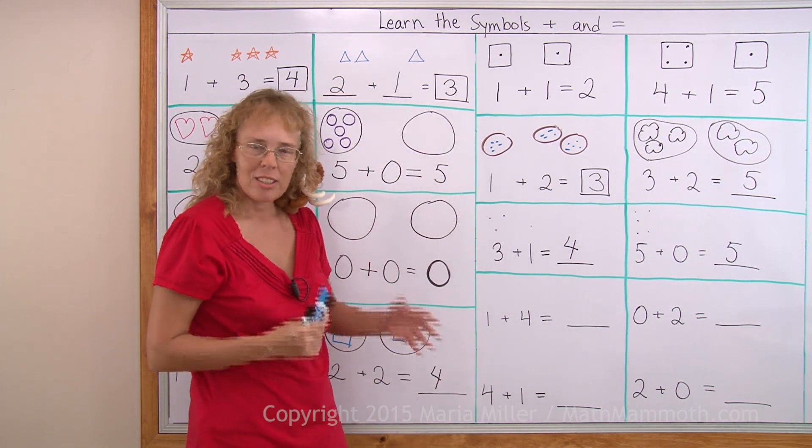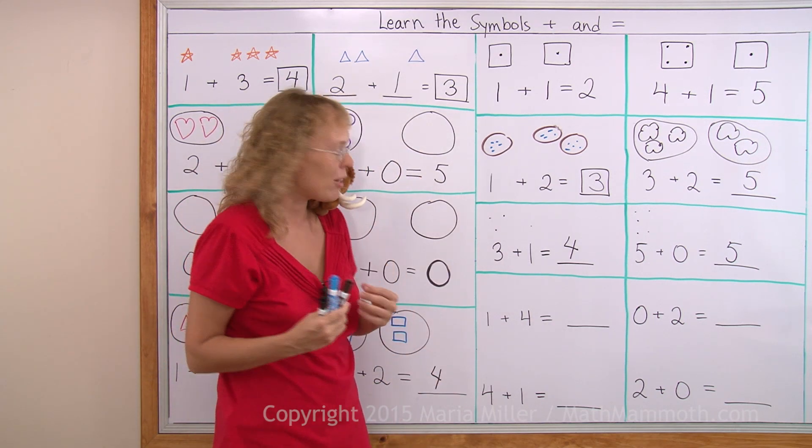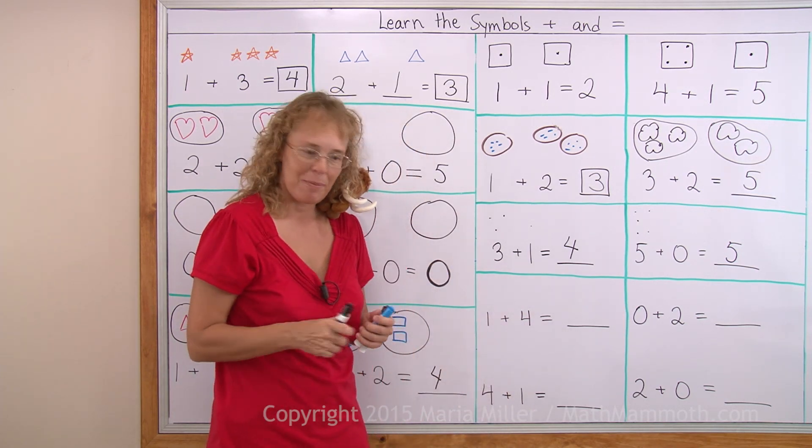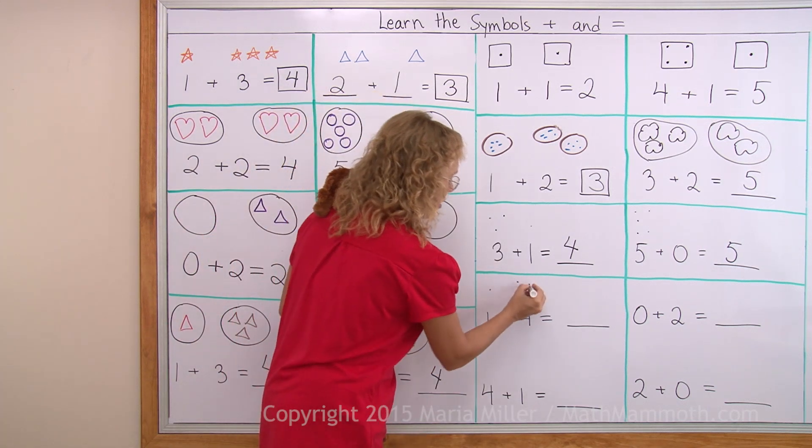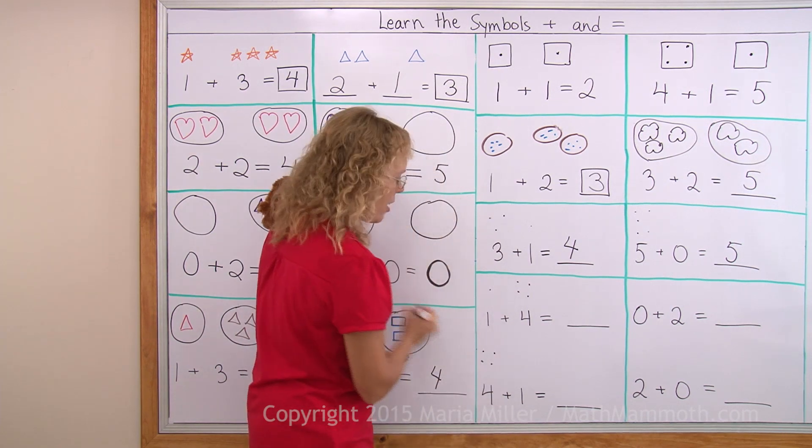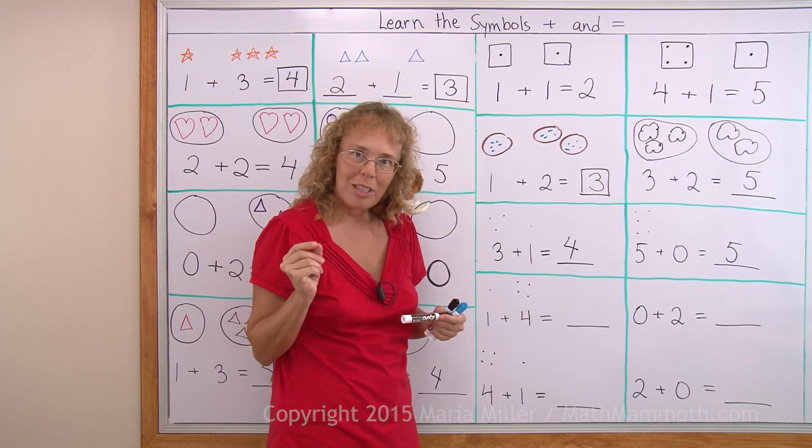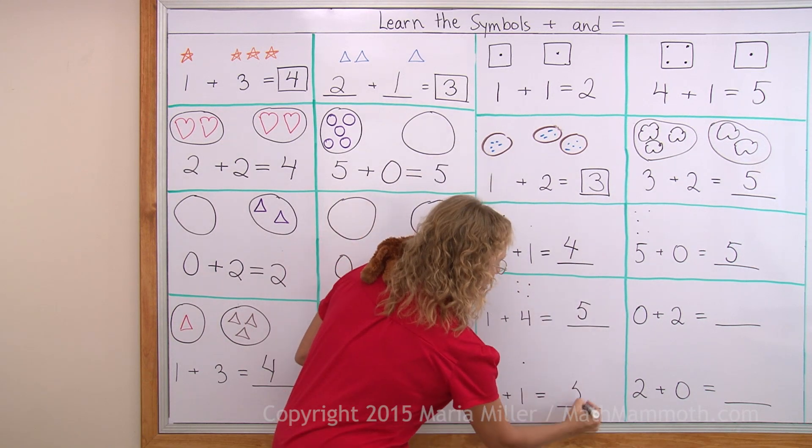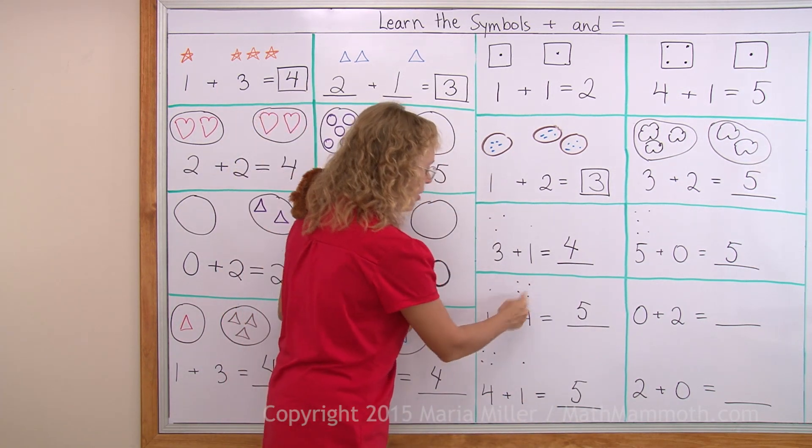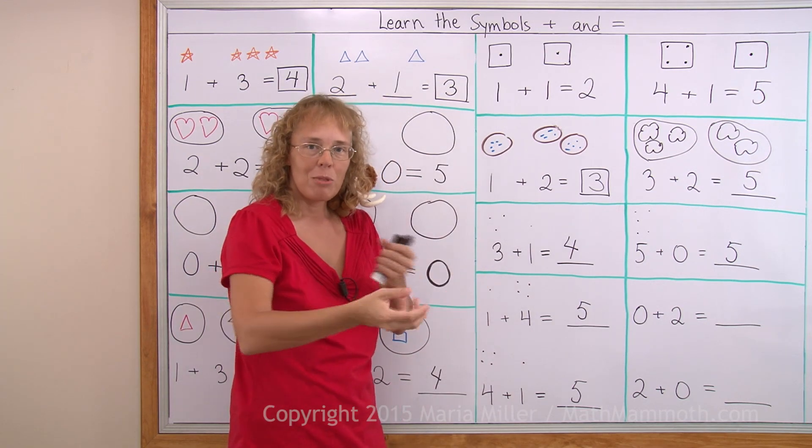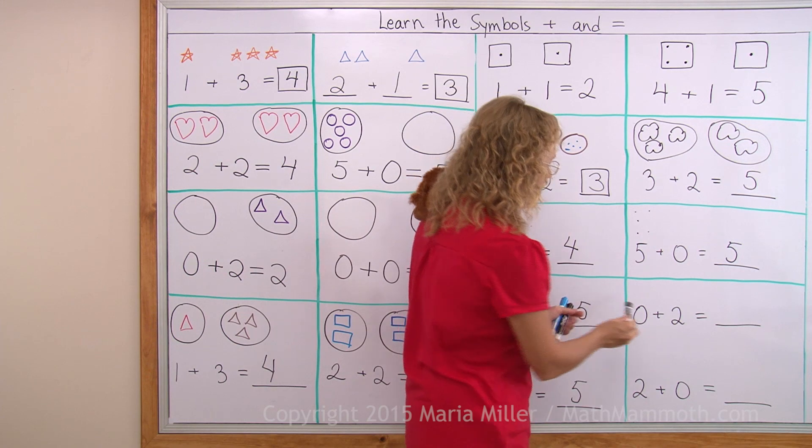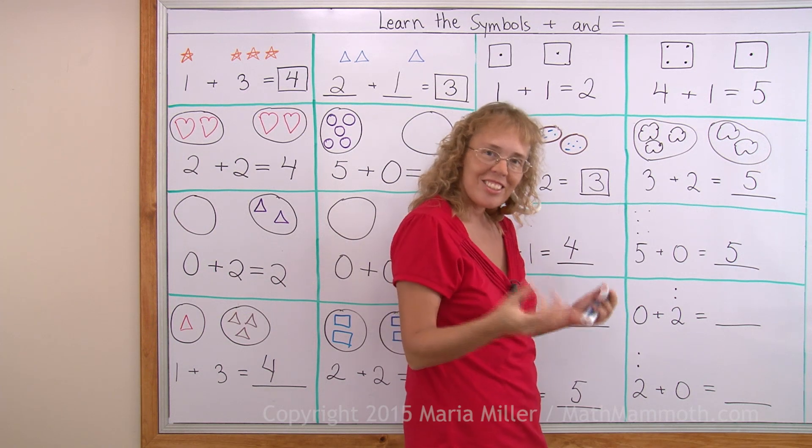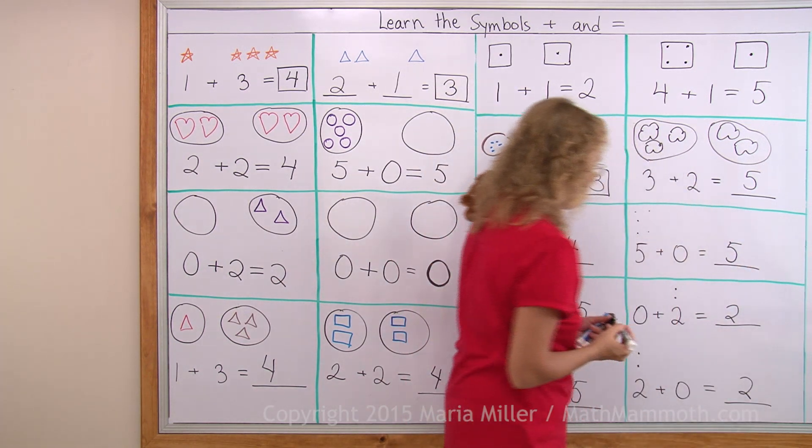Lastly, look at these two problems. There's something similar. Something is same about them. One plus four equals something. Four plus one equals something. Now, if I draw, I will draw one here, four here, and four here, and one here. Do you notice something? Either way, my answer will be the same. It will be five and five. Either way. Because I have one and four, or four and one. It does not matter in which order I add. Here again, if I have zero and two dots, or two dots and zero dots. Either way, the answer is the same. That makes it easy for those two problems.